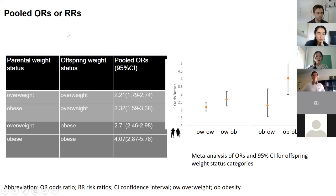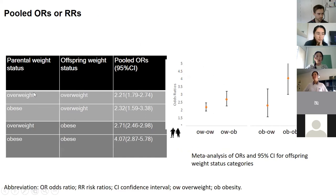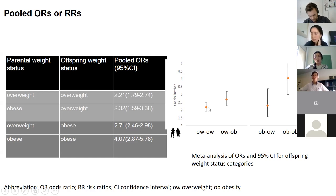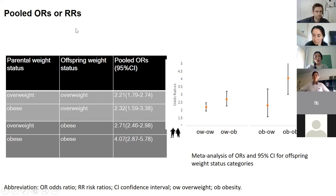Moving to the odds ratio results — there are many forest plots behind this, so the results are summarized in a table. For offspring born to overweight parents, the odds ratio of being overweight is 1.2 and of being obese is 1.5, compared to those with normal-weight parents. The figure suggests a possible dose-response relationship, though we don't have enough data to confirm. Even for odds ratios, the evidence supports a positive association between parental and offspring BMI.